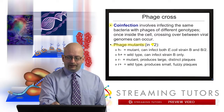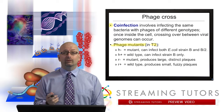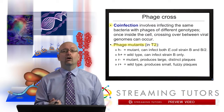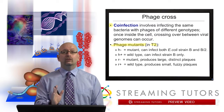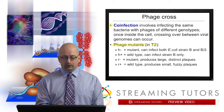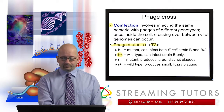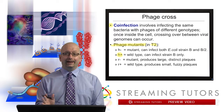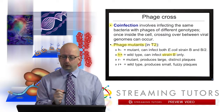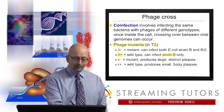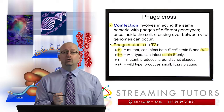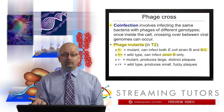Now, phage mutants: bacteriophage T2 is a very famous one that a lot of work has been done with. The T-even phages — T2, T4, etc. — are among the most widely studied. We're going to look at two different loci, two genes of the virus: one called H and one called R. The wild type for H can only infect E. coli strain B, but the H-minus mutant can infect not only strain B but also strain B/2. That's the difference between the wild type and the H-minus mutant.